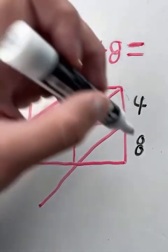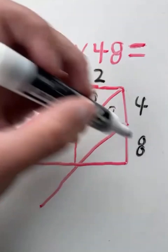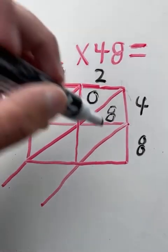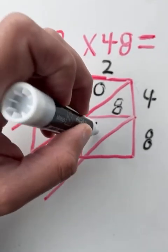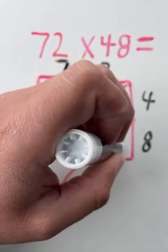Next, we're going to multiply two times eight. Two times eight equals 16. So the 16 will go in this square here. We're going to put a one in the top triangle and a six in the bottom triangle.